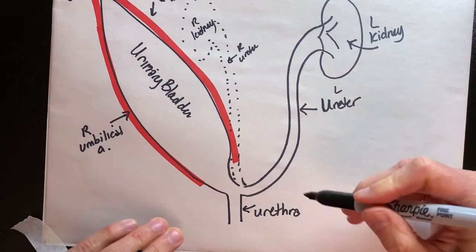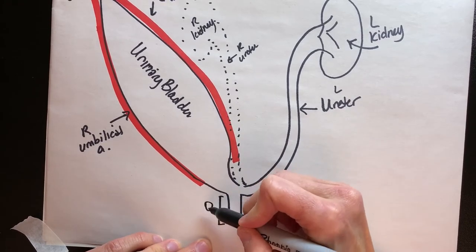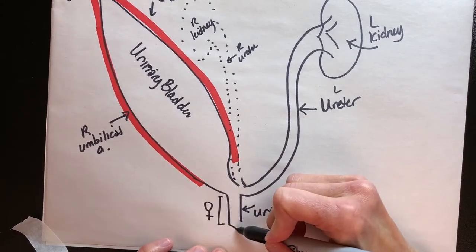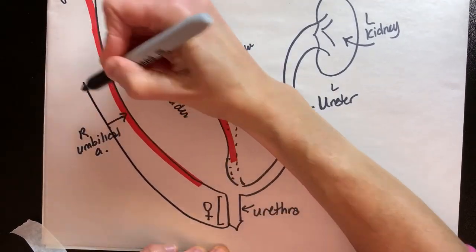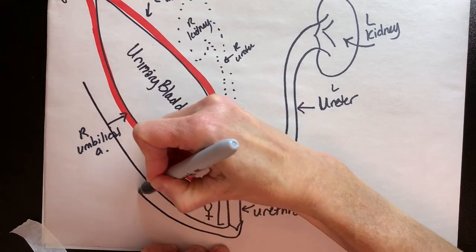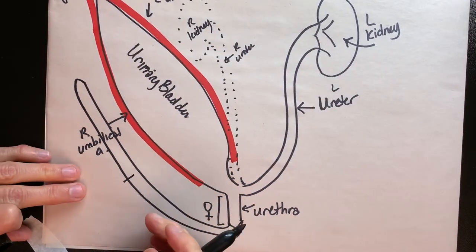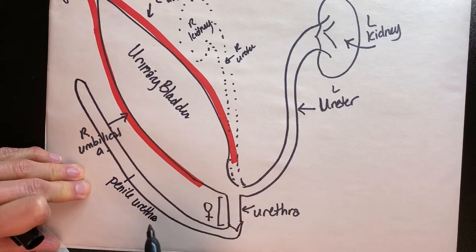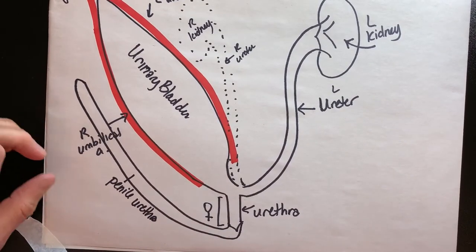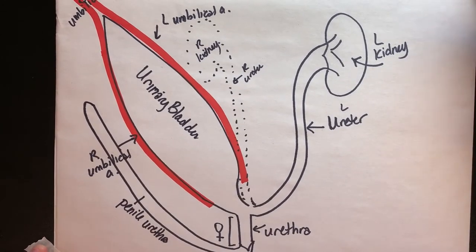The urethra is either in females this short tube here - this would be a female - and then it would exit out the urethral orifice. In a male, however, the urethra continues up through the penis. The urethra is contained inside the penis as the penile urethra inside the penis of the fetal pig.